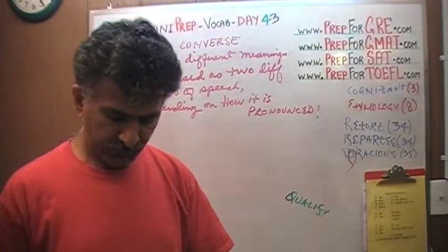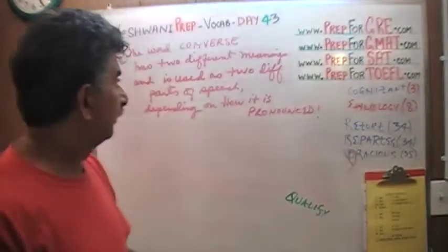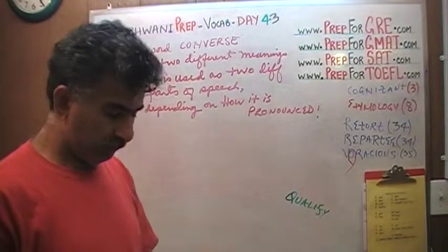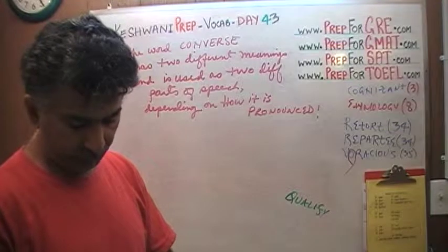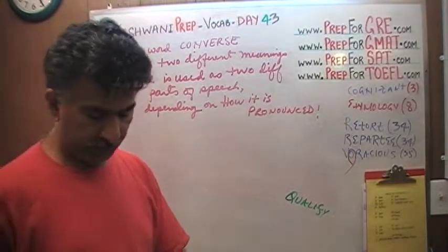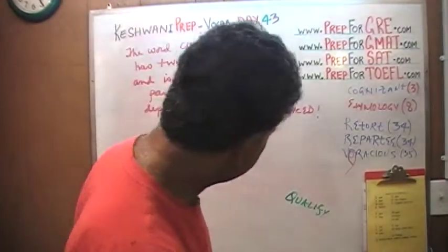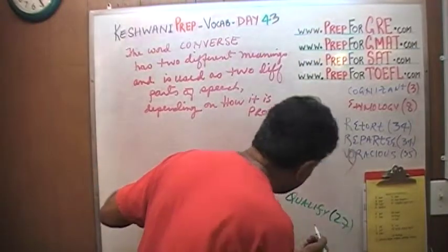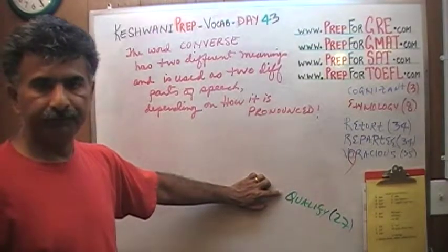Hopefully you've mastered all the words in the first 42 days before you came to day 43. But just in the event that you have not, you should make a habit of going through day number one and mastering all the words. Qualify is a simple word — well, not quite.